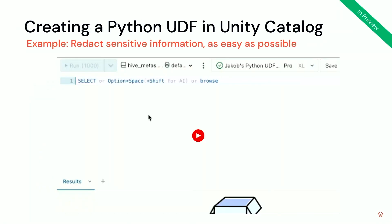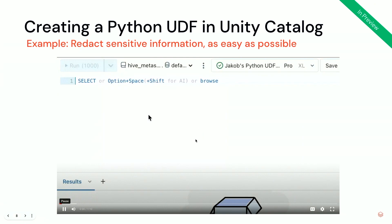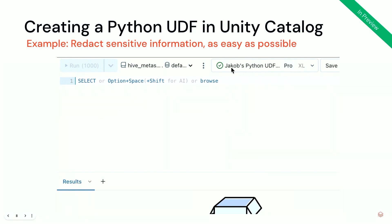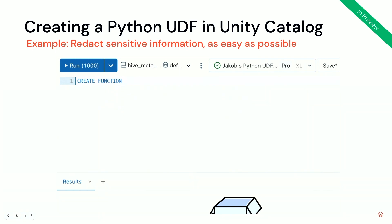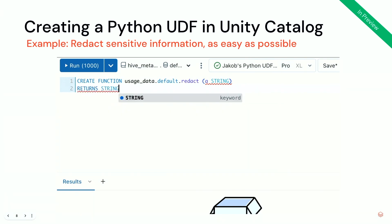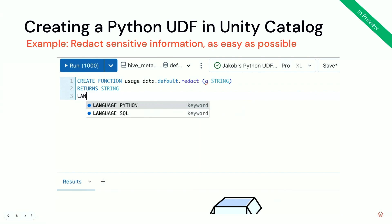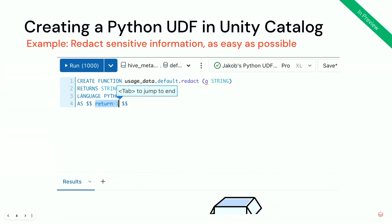So how does it work? Instead of just talking through it, let me show you how it actually works. In this short demo of how to create a UDF, I create a new query in the SQL editor and connect it to a Pro DB SQL warehouse. The first thing is to create the UDF — you do a CREATE FUNCTION, then specify the three-level namespace for your function, which I call redact. You specify the input parameters, which is a string, and the function will also return a string. What you could do so far is select SQL as a language, but what's new is you can also say this UDF is of language Python, and then you start adding your Python code.